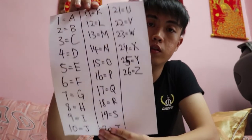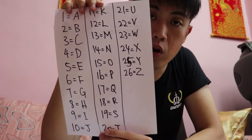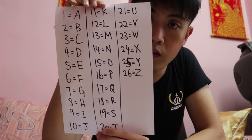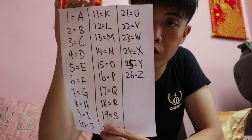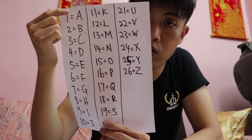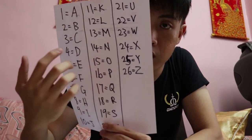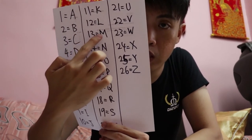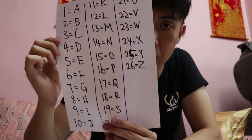I would like you to pick an alphabet from the number that you have right now. For example, if the number you have is one, then your alphabet will be A. And if your number is 13, then your alphabet will be M. Got it? Okay, well done.